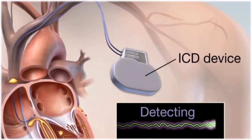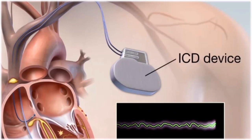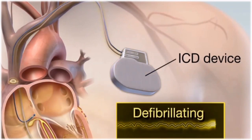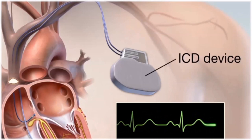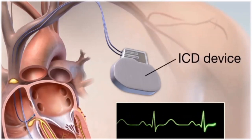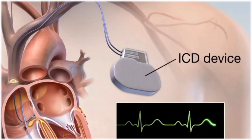An implantable cardioverter defibrillator, also known as an ICD, is a small device that's placed inside your body. It keeps an eye on your heart's beat using something called electrogram or EGM signals. If it notices your heart is beating in a weird way, it sends a shock to get your heart back to its normal rhythm.